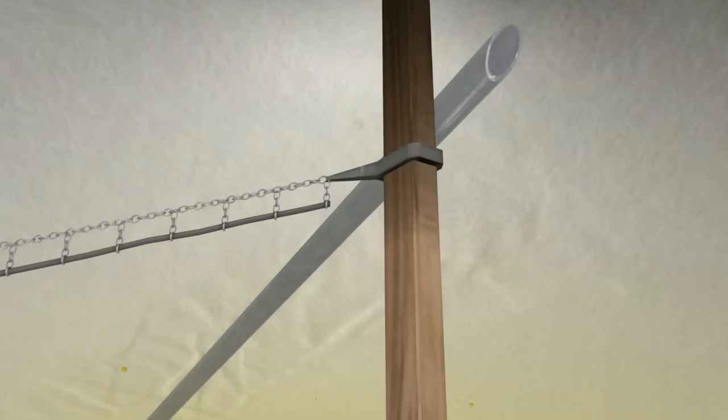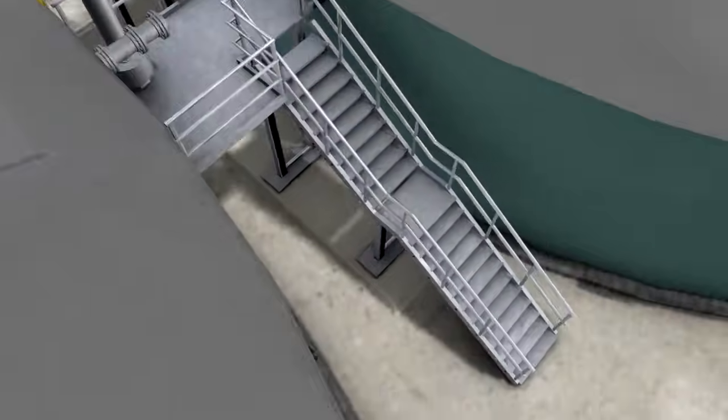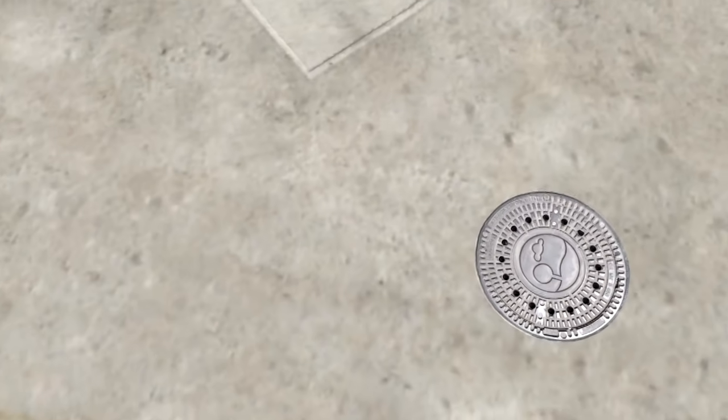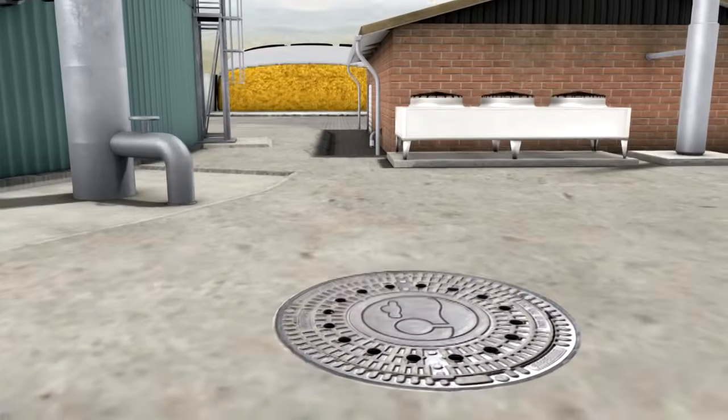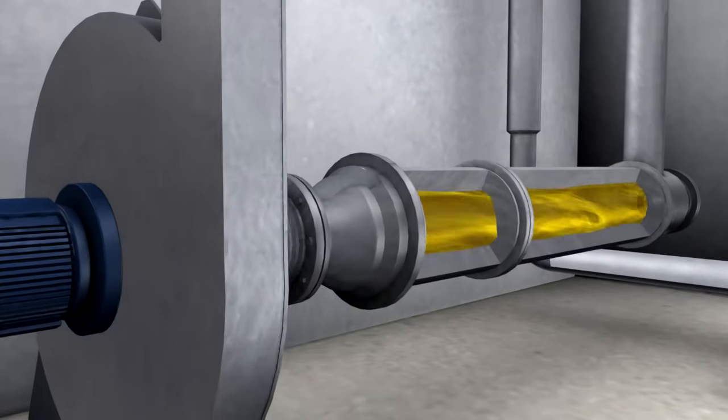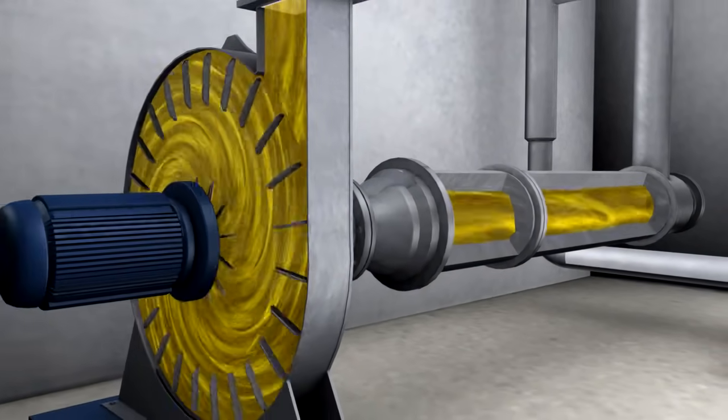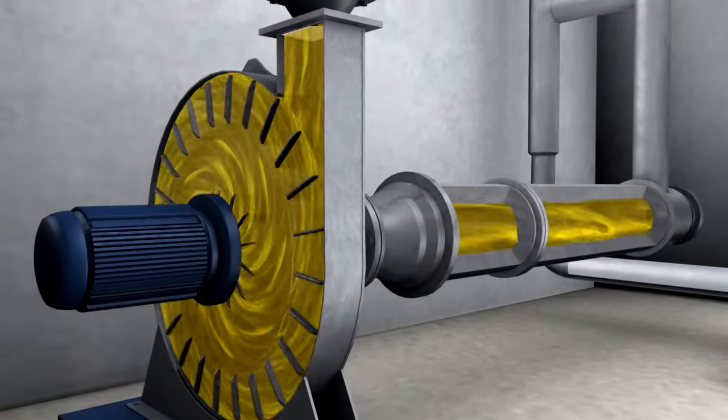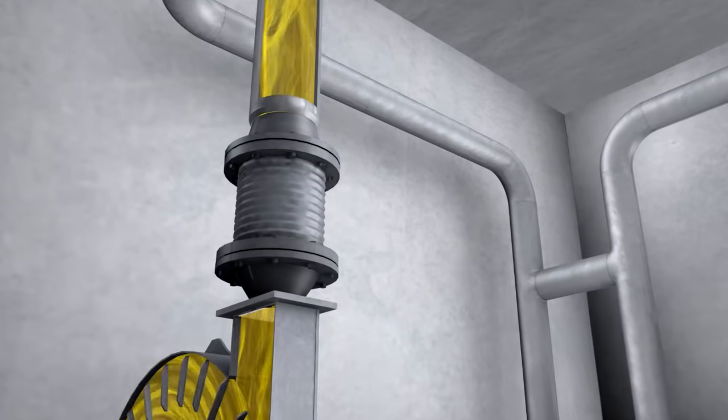The biogas arising in the fermenter enters a connecting gas line where the gas is simultaneously cooled and dehydrated. The biogas is constantly monitored for quality through a gas analysis system. Afterwards, it enters the gas compressor. The gas compressor increases the pressure so that the gas can be used in the CHP.